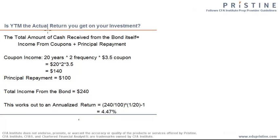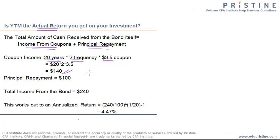Now, is the YTM the actual return you get on your investment? Let's find out how much money I would generate from the cash flows of the bond — basically the income from coupon payments and the principal payments. Your coupon income would be the amount generated from your coupons. So for 20 years, two times a year, at $3.50 per coupon, we get a total of $140.